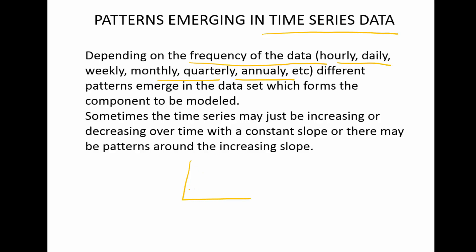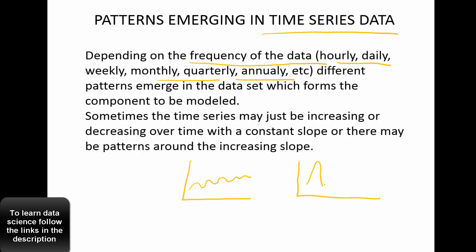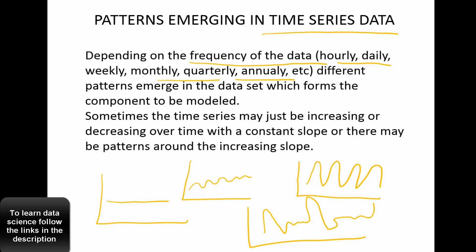Sometimes your time series data could look like a cyclical wave, sometimes a straight line, sometimes very random. A completely random series is totally constant — we cannot do anything about it. A very cyclical series has a clear, predictable pattern; you don't need a sophisticated model for that. It's like a sin(x) trigonometric function — very predictable.